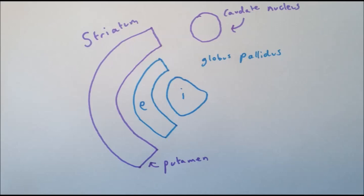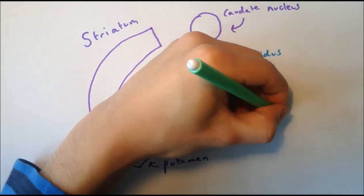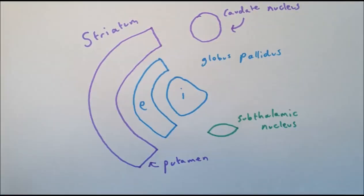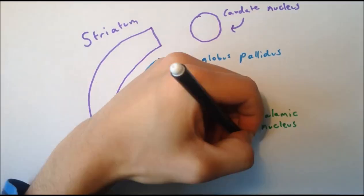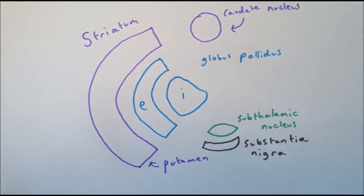The cells in the globus pallidus are also inhibitory. The subthalamic nucleus is a small lens-shaped nucleus and its cells are mainly excitatory. The final nuclei is the substantia nigra, named black substance because of its high levels of neuromelanin. It is composed of two parts, the substantia nigra pars reticularis and the substantia nigra pars compacta.